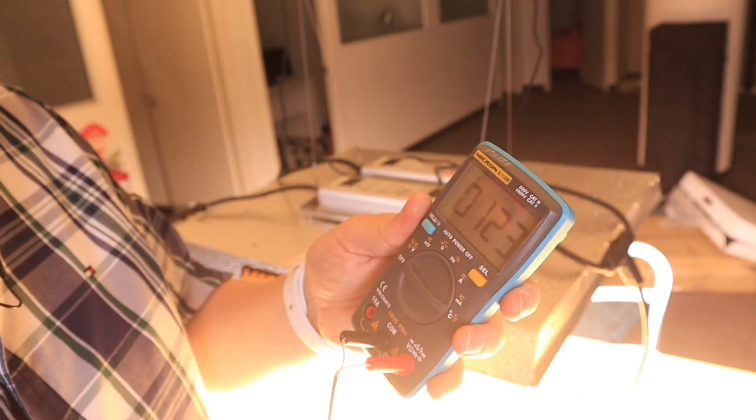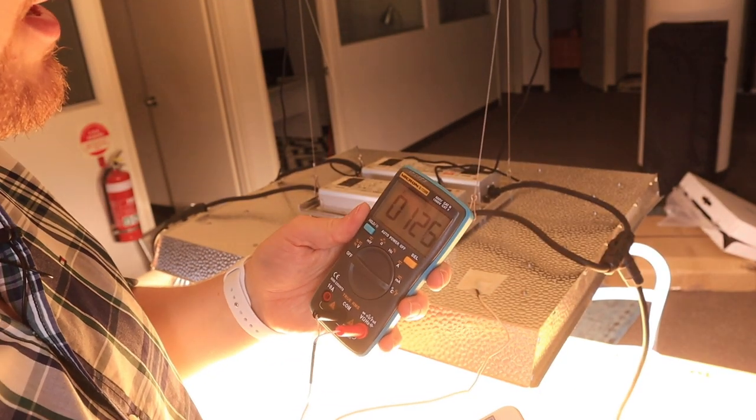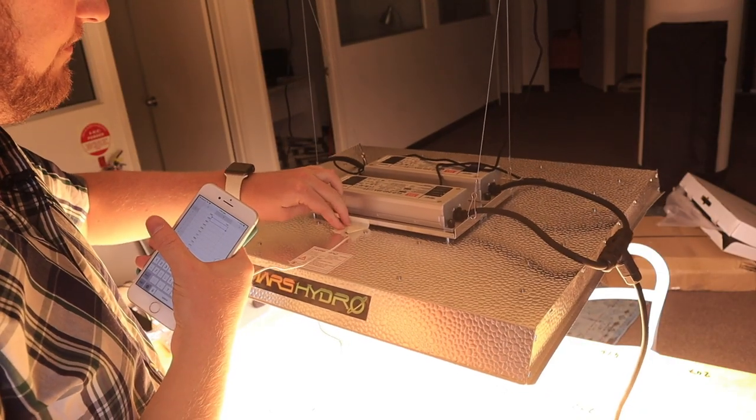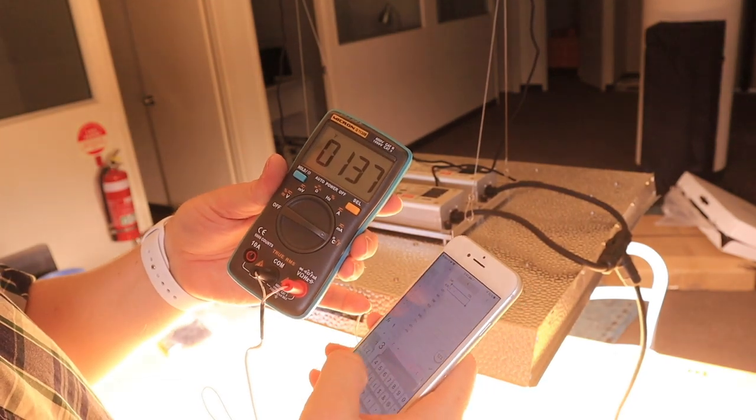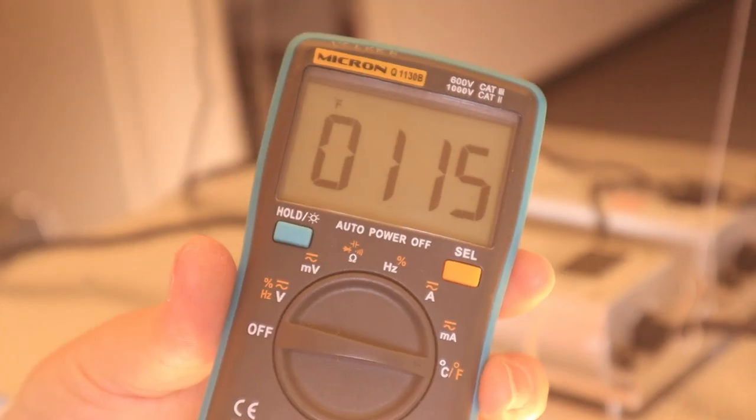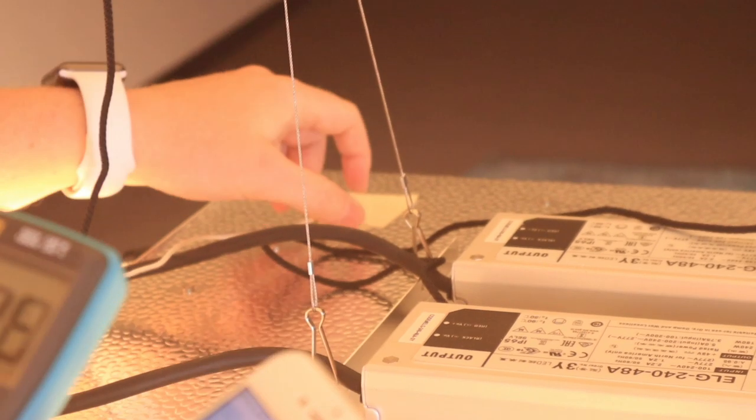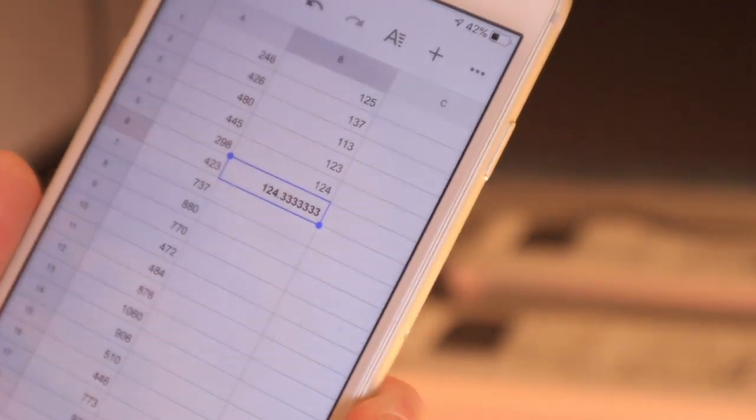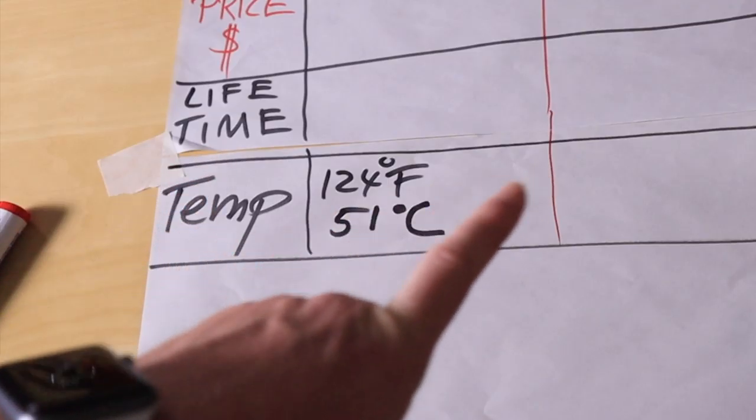First temperature spot, 125 Fahrenheit. Next, kind of in the middle, 137. Put it on top of the driver. So I measured temperature in five different spots. It should be enough. Now let's take the average, 124 Fahrenheit. That equals 51 Celsius.